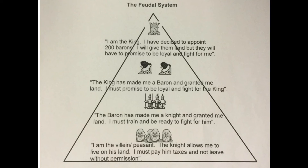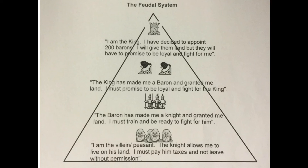The feudal system is represented by a triangle. At the top of the feudal system is the king. 'I am the king. I have decided to appoint 200 barons. I will give them land but they will have to promise to be loyal and fight for me.' The king has made me a knight and granted me land. I must train and be ready to fight for him.